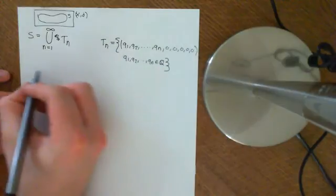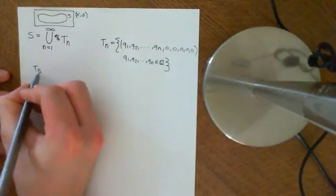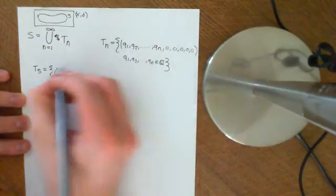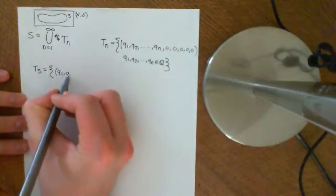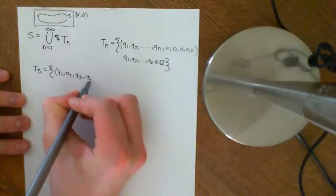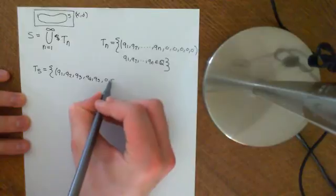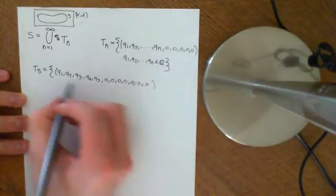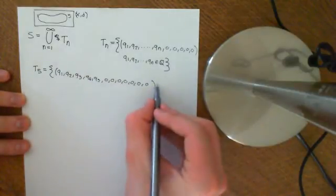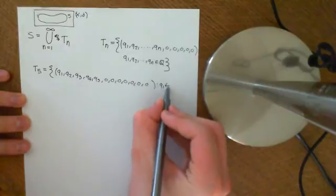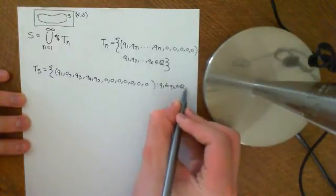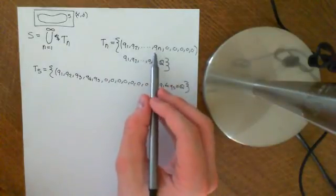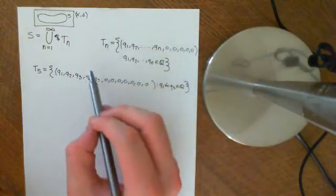So if we took, for instance, to give a concrete example, T5 would be the set of all sequences. So it would be the set of all sequences where you have rational numbers for the first five entries. Q1, Q2, Q3, Q4, Q5. And then after that, you just have zeros. No buts. You just have zeros. Zero, zero, zero, zero, zero. And other than that, you can have any rational numbers you like here. So Q1 to Q5 are all elements of the rationals. So that's T5. And basically, I want you to union up every single one of these sets of sequences.